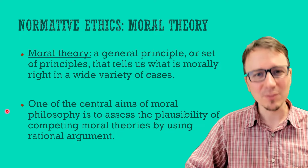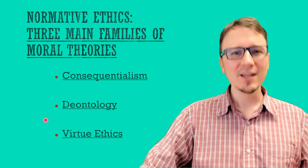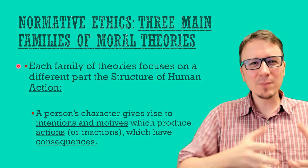Although there are countless moral theories within normative ethics, most of them fall within three main camps: consequentialism, deontology, and virtue ethics. One easy way to understand these theories is that they focus on different aspects relating to actions to determine whether an action is right or not.